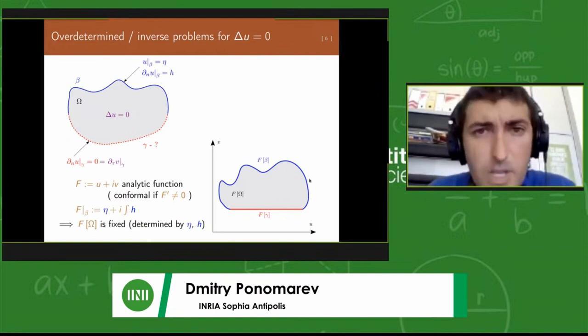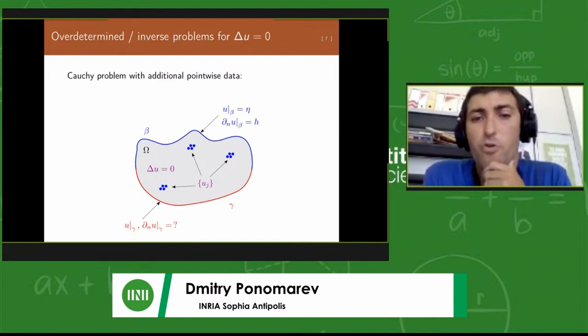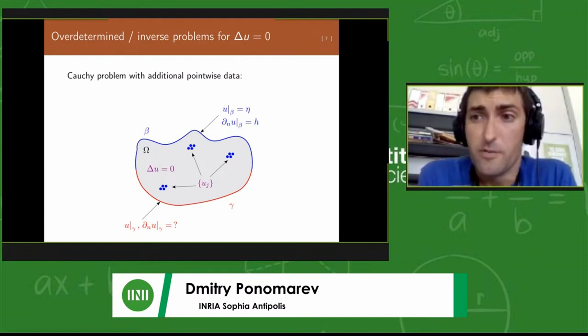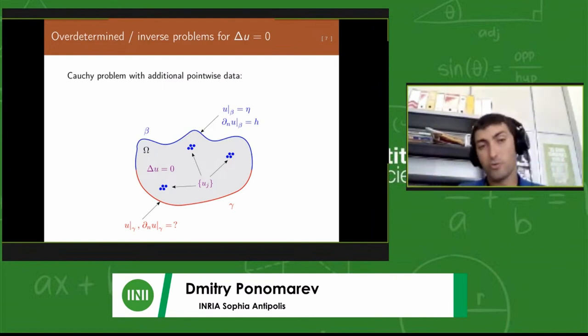Another problem comes from a modification of the first problem by adding some pointwise conditions from inside of the domain. Suppose that you have measurements available on part of the boundary, but also somehow you can peek inside the domain at certain locations. You would like your solution to meet these values. Such a problem can also be addressed in the proposed framework.